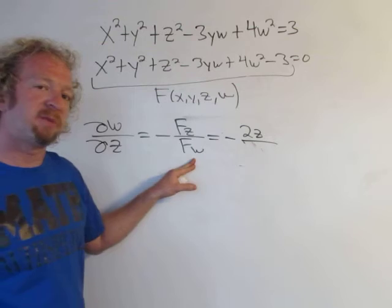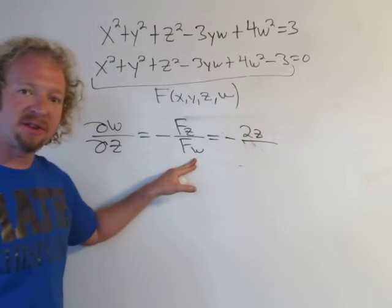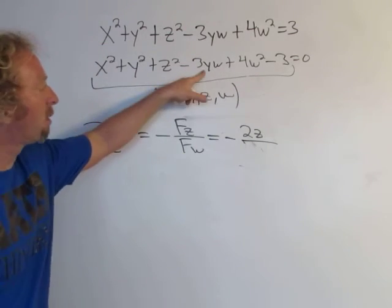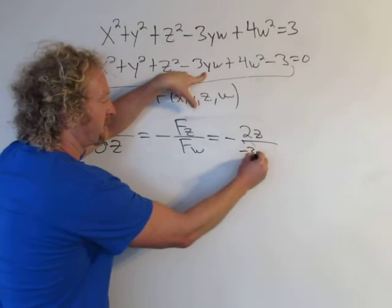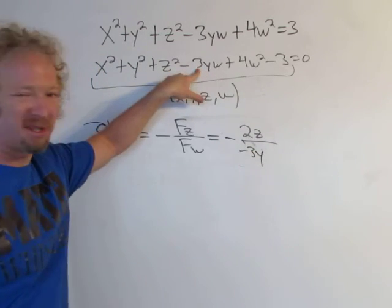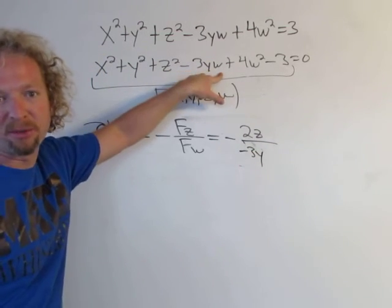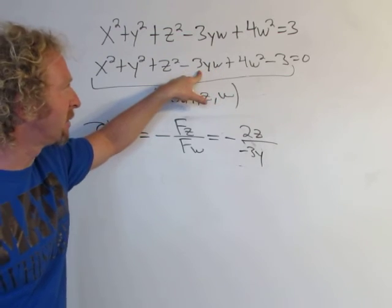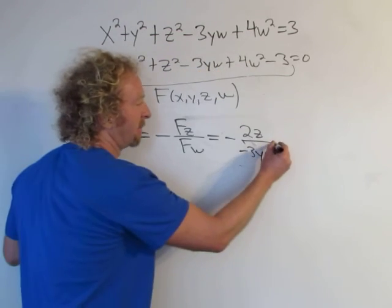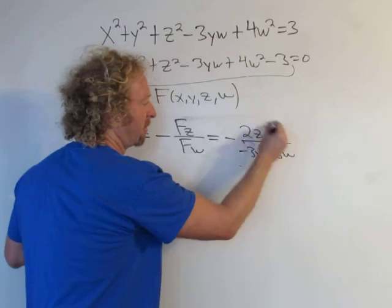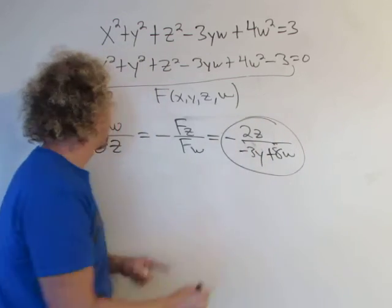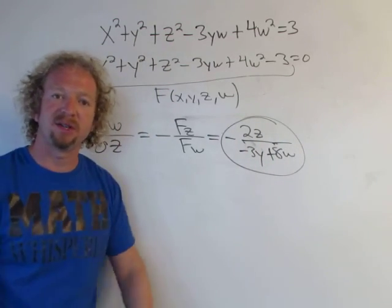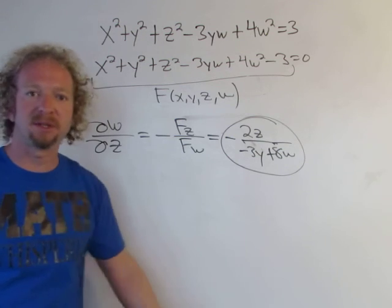Now we take the partial with respect to w — everything except w is constant, so x, y, and z terms are zero. We get negative 3y again, because it's a number times w, so the derivative of w is 1 and that hangs out. And then 8w again on the bottom, so plus 8w. So that would be the partial of w with respect to z. Likewise you can find the other ones — I hope that made some sense.